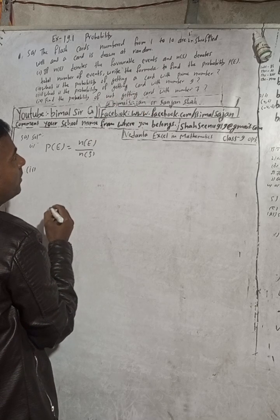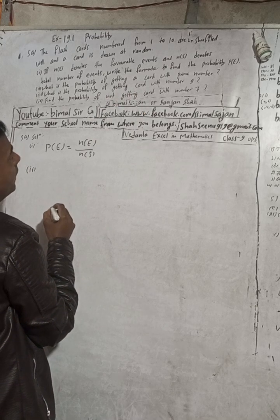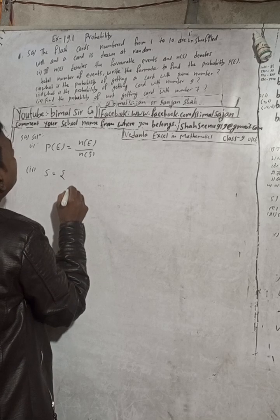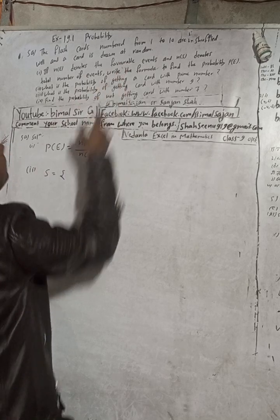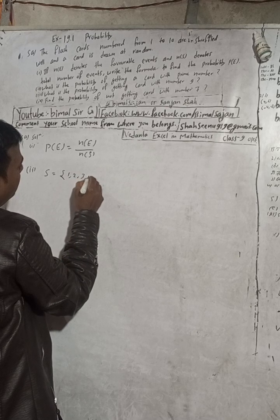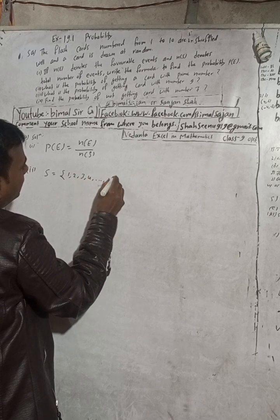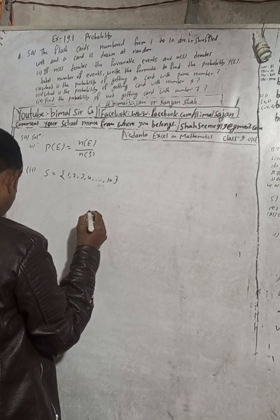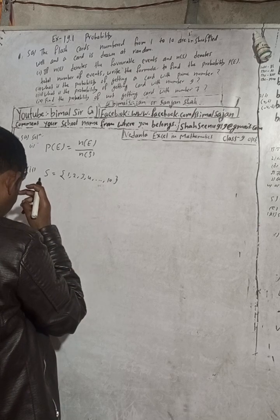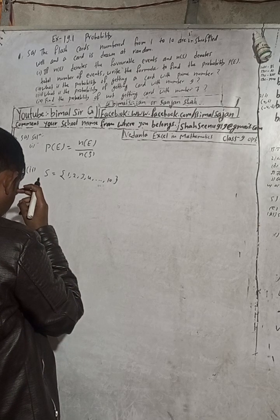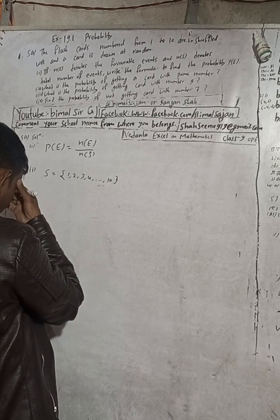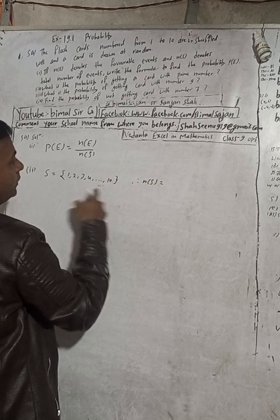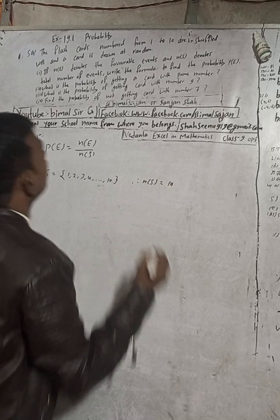First I'll write the sample space. The flash cards go from 1 to 10, so the sample space is {1, 2, 3, 4, ... 10}. This means n(S) is equal to 10.